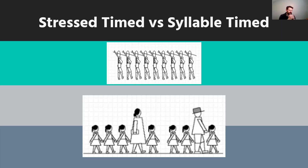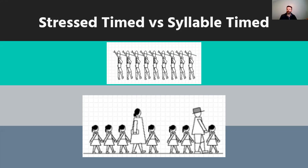English is a stress-timed language, which is different from a syllable-timed language. In a syllable-timed language, represented by a group of soldiers marching, every syllable receives equal stress and equal time in the pronunciation of that phrase. It's more like a soldier march — the rhythm is repetitive, constant, and consistent.